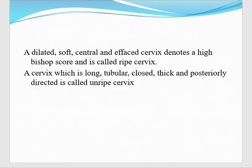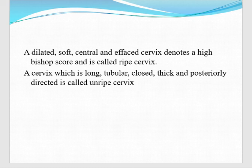We will compile all the Bishop score components. In summary, a dilated, soft, central, effaced cervix gives a high Bishop score and will favor induction of labor — this is a ripe cervix. If the cervix is long, tubular, closed, thick, and posterior, it means it is an unripe cervix — an uneffaced cervix — with a poor Bishop score.